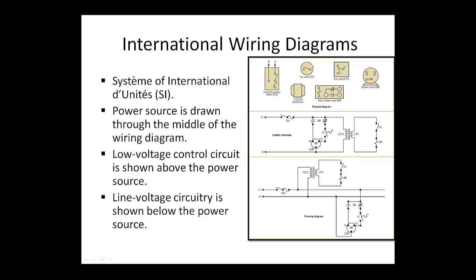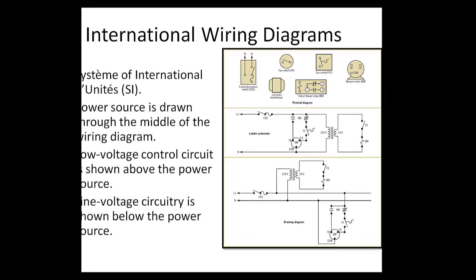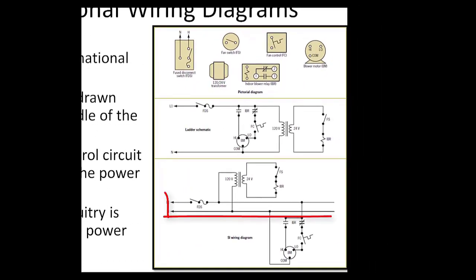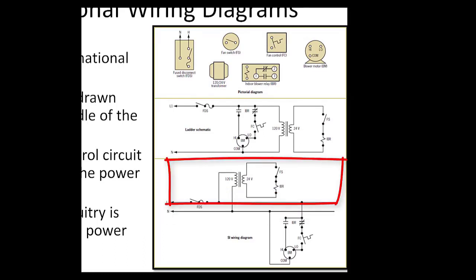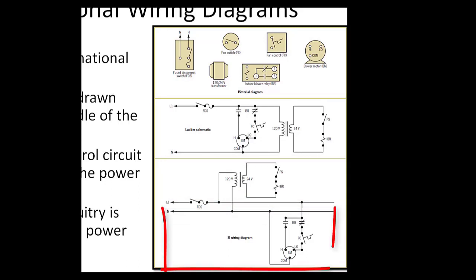Leaders in science and technology worldwide have used the system for international style of wiring diagrams, sometimes called SI. Within that system, the power source is drawn through the middle of the wiring circuit. The low voltage control circuit is shown above the power source, and the line voltage circuitry is shown below the power source.